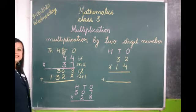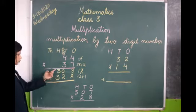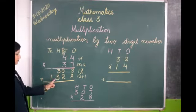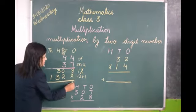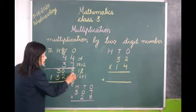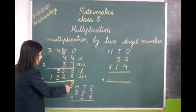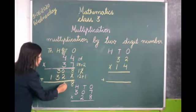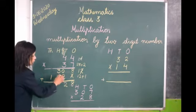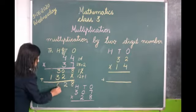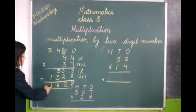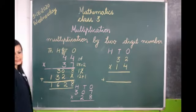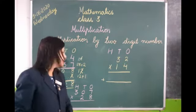Now the third step is we have to add these 2. 308 plus 132. How do we add? Now there is nothing here, so 8 comes down here. Now 0 plus 2 is 2. 3 plus 3 is 6, and this 1 comes here. So you get the answer 1628.